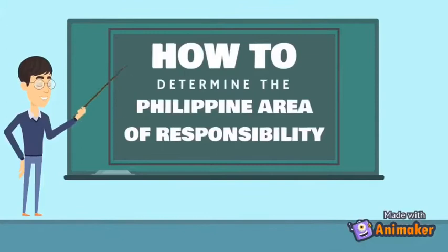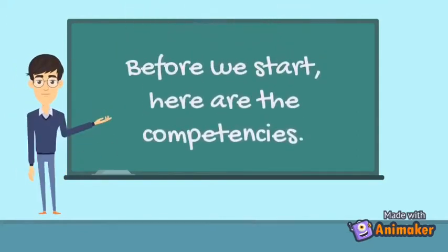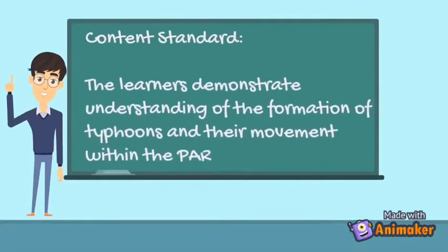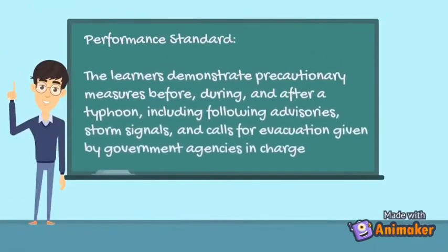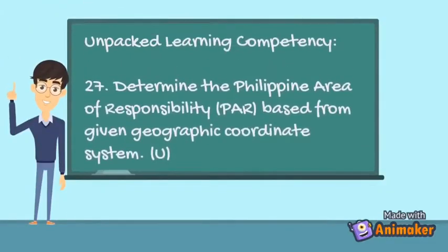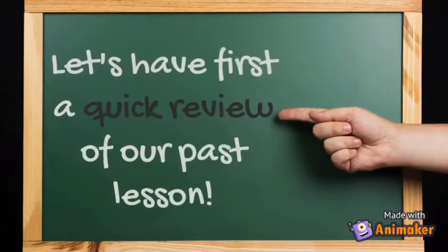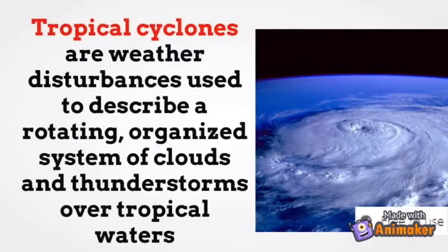Today's class is on how to locate the Philippine Area of Responsibility. Let's have a quick review of our current lesson. Tropical cyclones are weather disturbances used to describe a fleeting, organized system of clouds and thunderstorms over tropical waters.